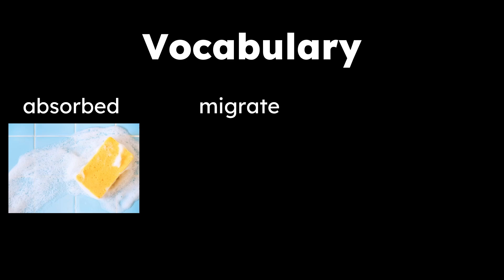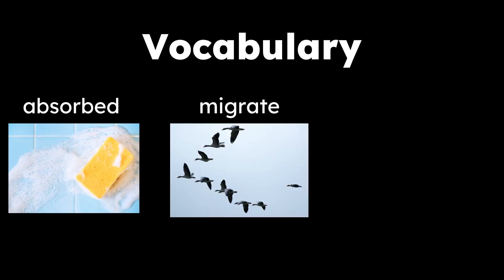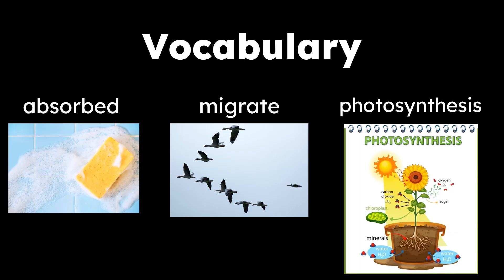Here are some vocabulary words in our read aloud today. The first word is 'absorbed' — something that has been taken in and soaked up. The next word is 'migrate' — to move from one area to another based on the seasons. And the last word is 'photosynthesis' — the process in green plants that uses light to turn water and air into food when the plant is exposed to sunlight.